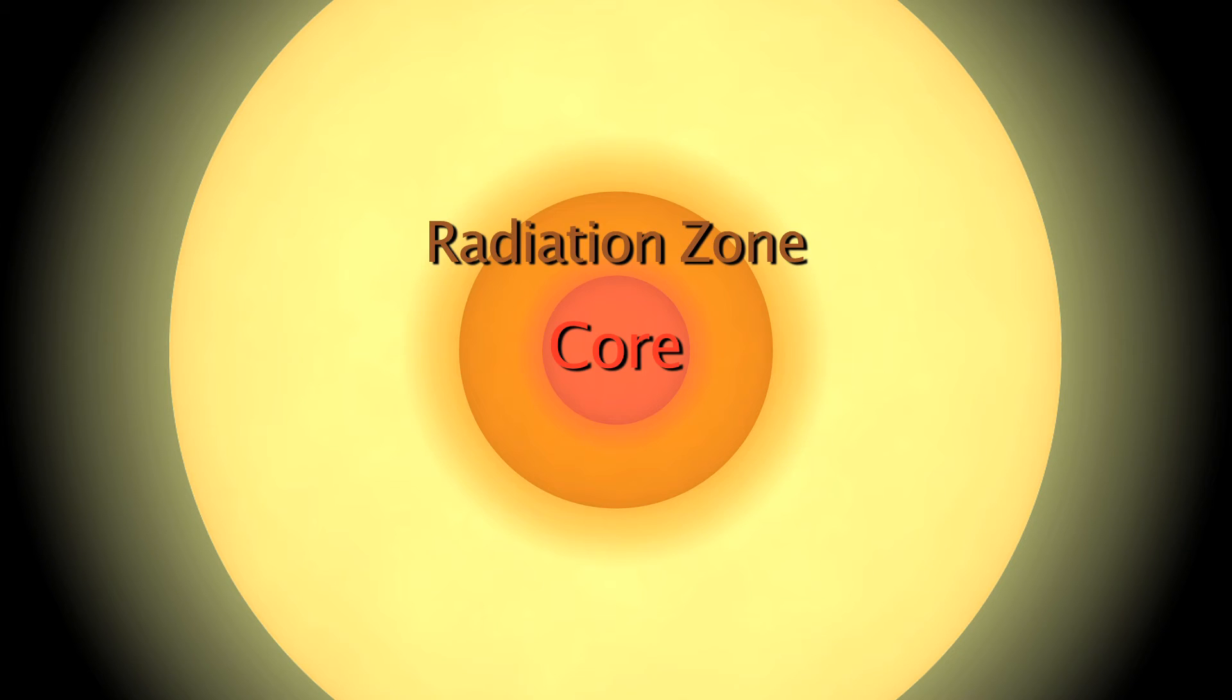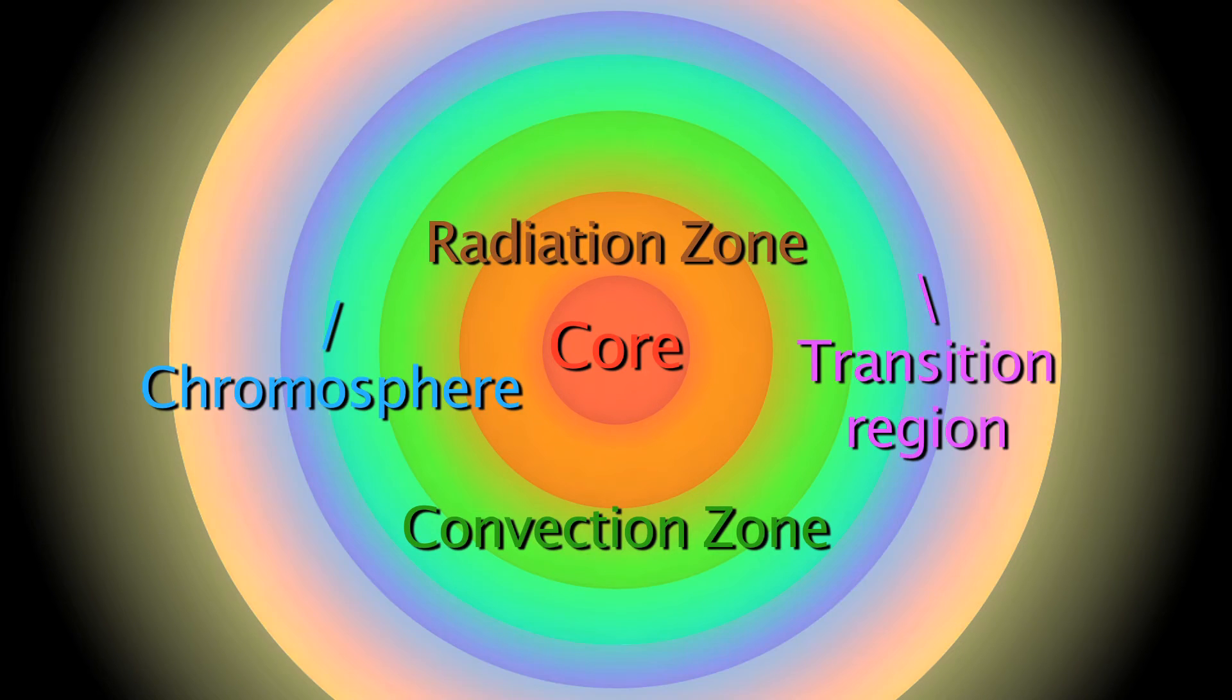The sun's structure is divided into seven regions: the core, the radiation zone, the convection zone, the chromospheres, the transition region, the photosphere, and the corona.